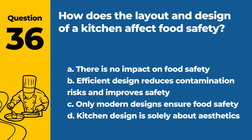Question 36. How does the layout and design of a kitchen affect food safety? A. There is no impact on food safety. B. Efficient design reduces contamination risks and improves safety. C. Only modern designs ensure food safety. D. Kitchen design is solely about aesthetics. Answer: B. A well-designed kitchen layout can significantly reduce the risk of contamination and enhance overall food safety.